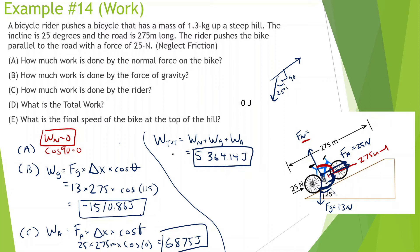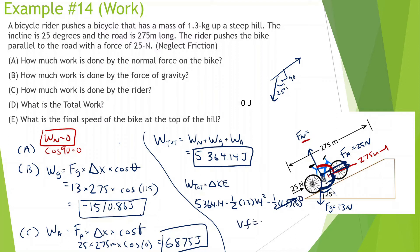What is the final speed at the top of the hill? Work total is equal to change in kinetic energy. So 5,364.14 equals one-half m v-final squared minus one-half m v-initial squared. Mass is 1.3 kg, and the bike starts at rest, so v-initial is zero. Solving: 5,364.14 times 2 divided by 1.3, then taking the square root, we get 90.84 meters per second.